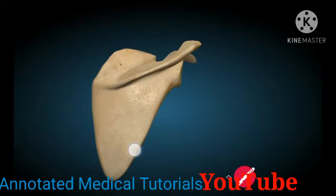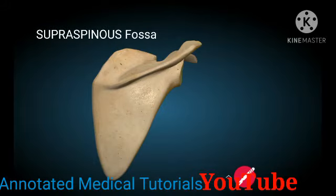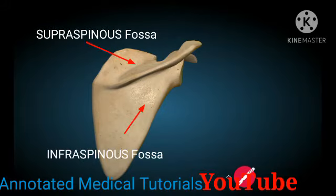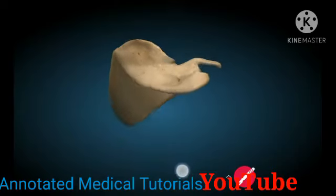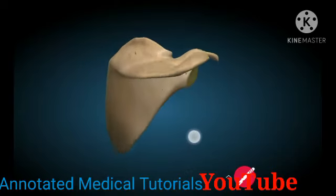The posterior surface is divided into two parts by the spinous process. It divides it into the upper part and the inferior part. The upper part is called the supraspinous fossa and the lower part is called the infraspinous fossa. All these fossae are for the attachment of muscles.